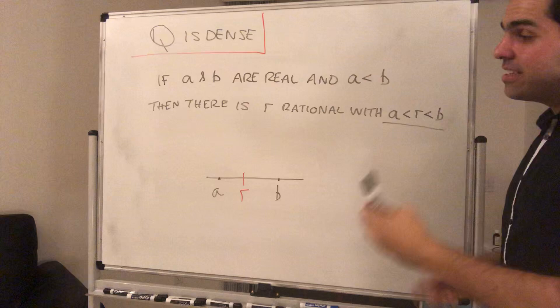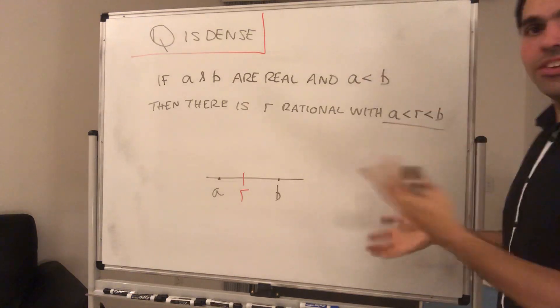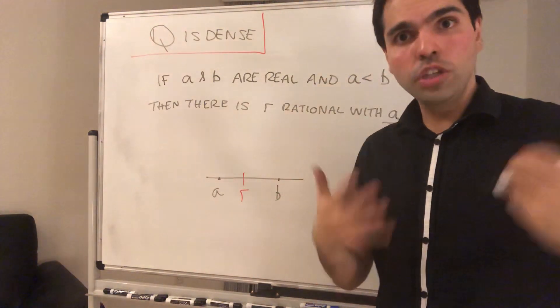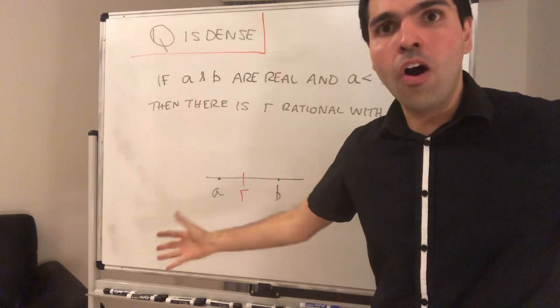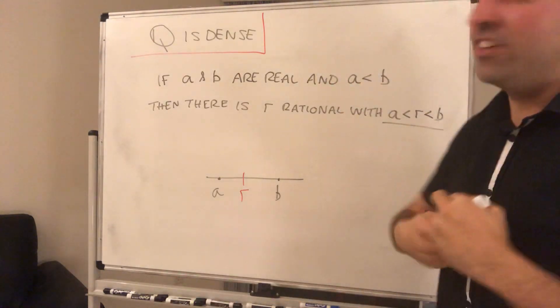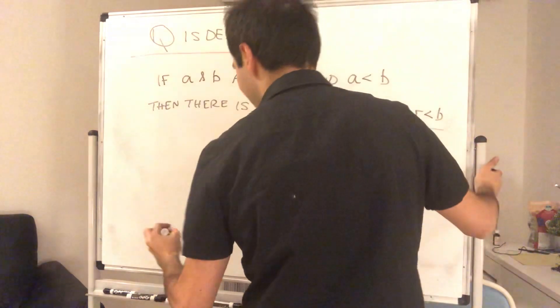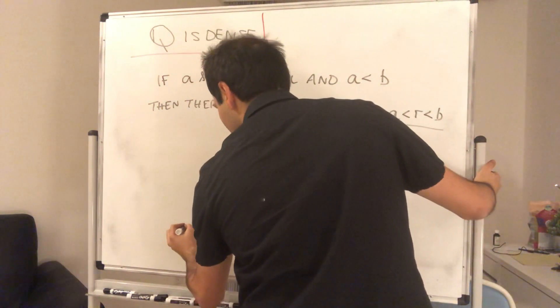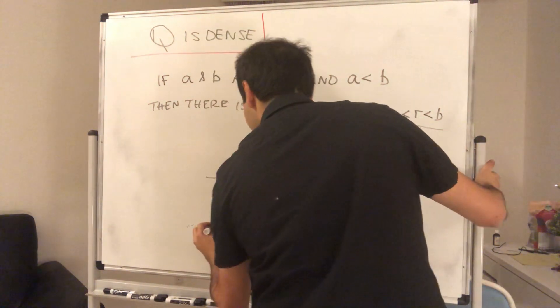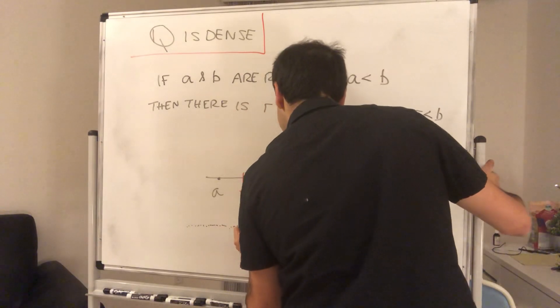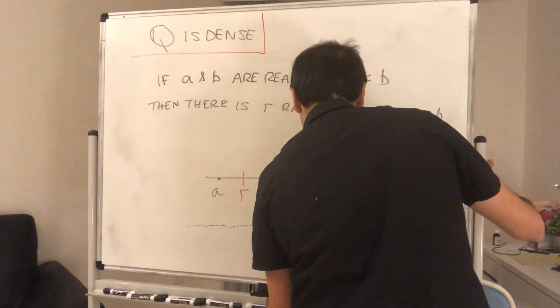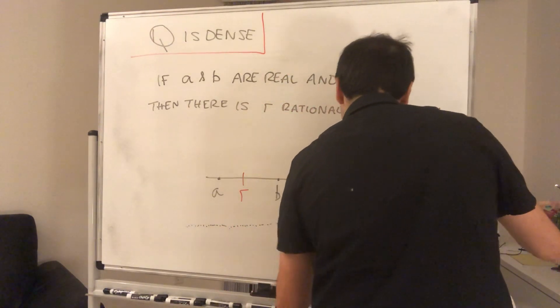And this says something very interesting about the rational numbers, because even though Q is not all of R, it kind of fills up the real number line. So in other words, Q is like the real number line but with a bunch of dots that almost fill it up. This is a picture of Q.